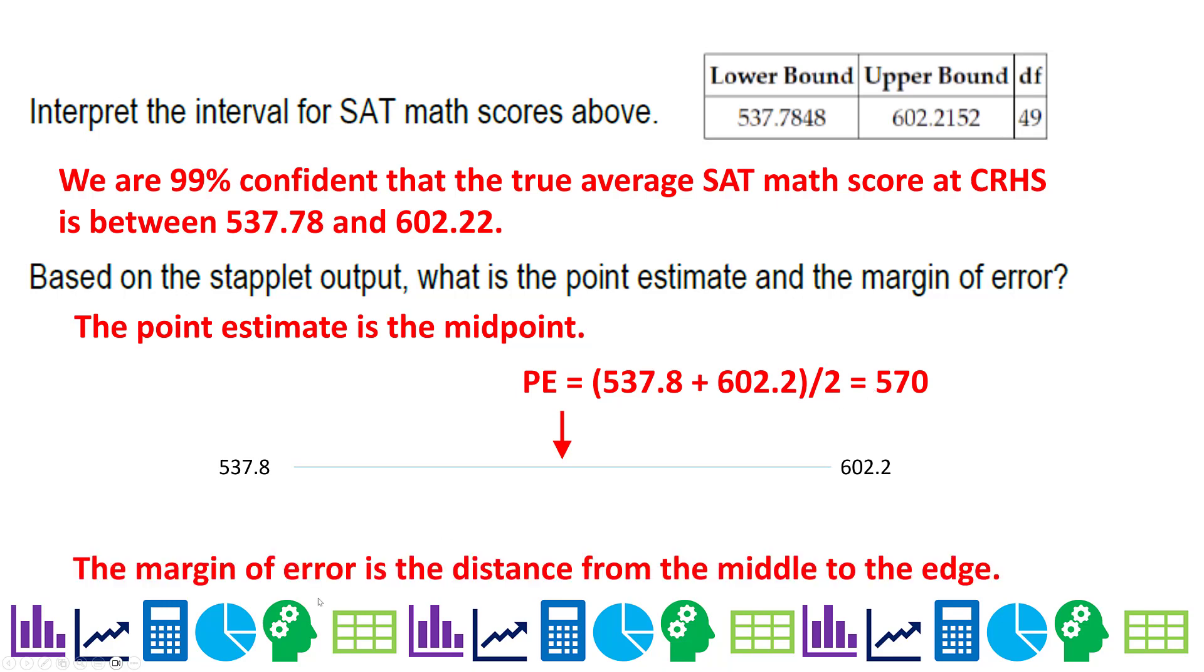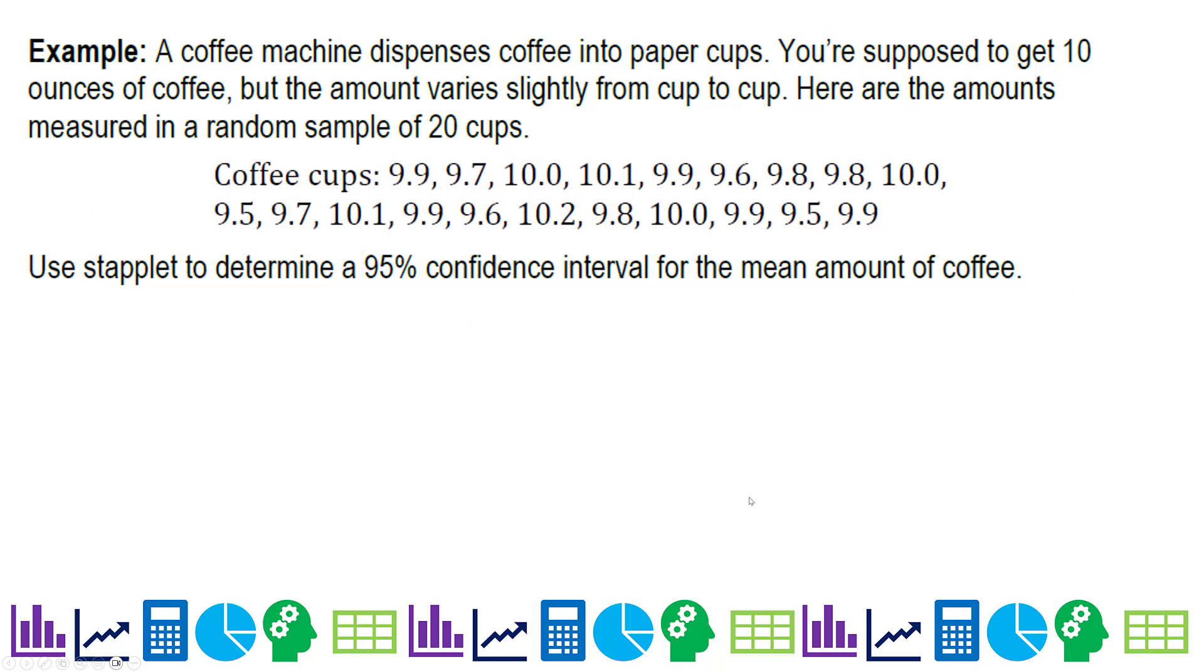Then the margin of error is the distance from that midpoint to one of the edges. So either edge, the lower edge or the upper edge. I tend to do the lower edge because then I can just say point estimate minus the lower bound and I get 32.2. And that should look familiar because when we did it by hand, we had our point estimate to start was 570. Remember, that's what we put in the staplet. And we calculated a margin of error of 32.2.